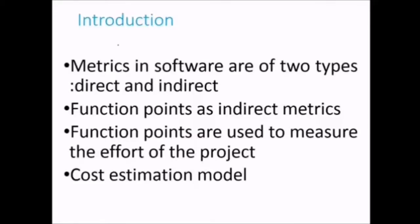Let us talk about software metrics using the Constructive Cost Model, also called the COCOMO model. Metrics in software are of two types: direct and indirect. Function points are an indirect metric and are used to measure the effort of a project. Now we are going to talk about the cost estimation model.